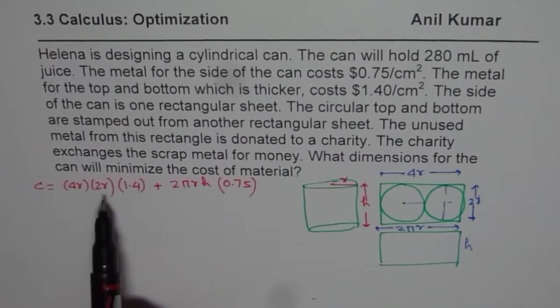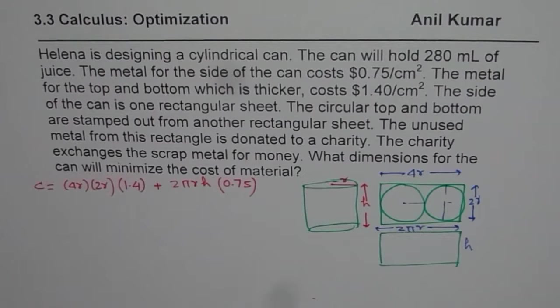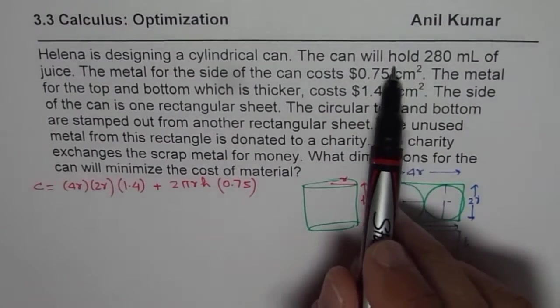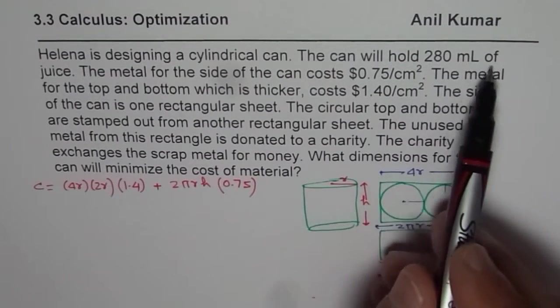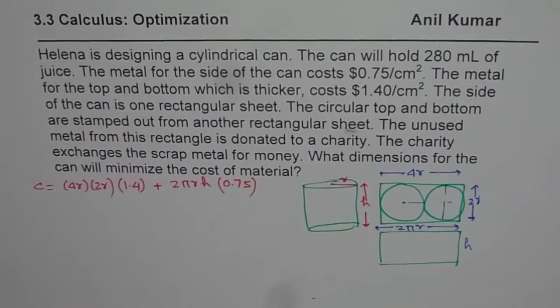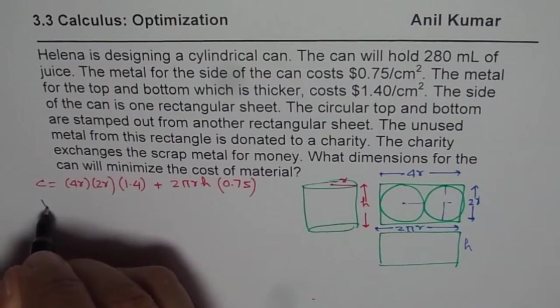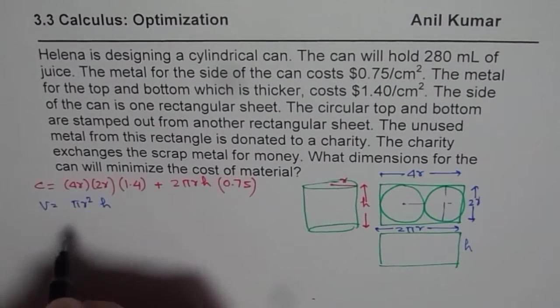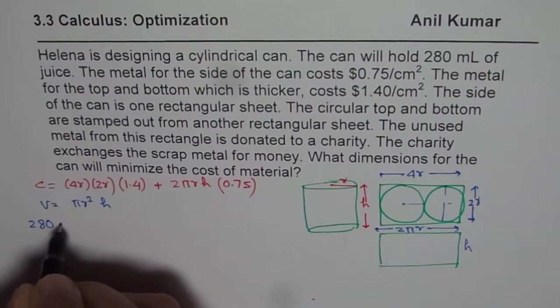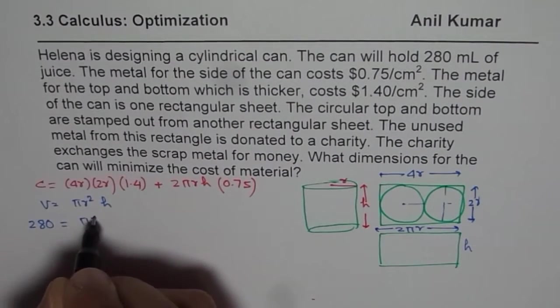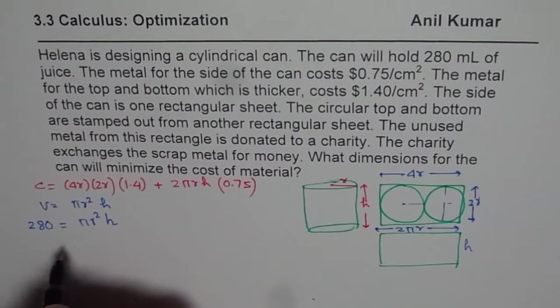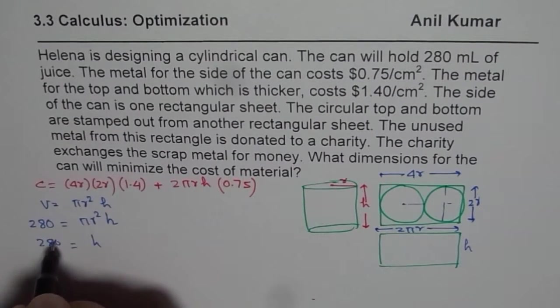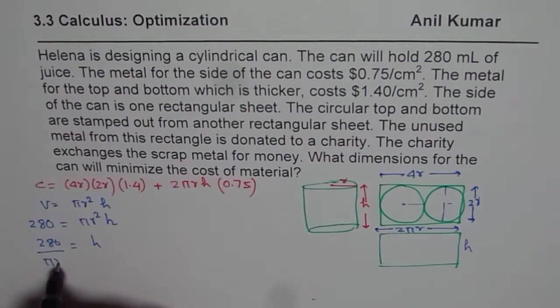Now the idea is we need to relate radius with height. And we can do that from the given volume. It can hold 280 milliliters of juice. So that means the volume, volume will be pi R square H and volume is given to us as 280. So we have 280 milliliters equals to pi R square H. So from here, you can write what H is. H is 280 divided by pi R square.